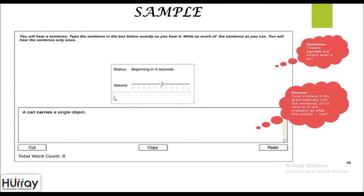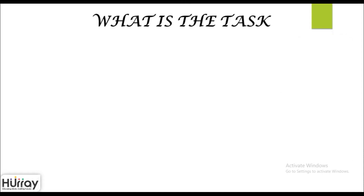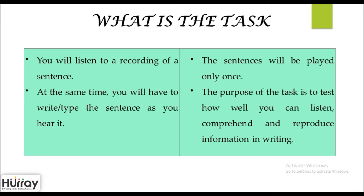This is the volume control and here is your progress bar. You have to listen to the recording, and once it stops you have to type it down into this particular box. Try to write as many words as possible — they should be grammatically correct. So what is the task about? You will listen to the recording of a sentence and at the same time you will have to type or write the sentence as you hear it.